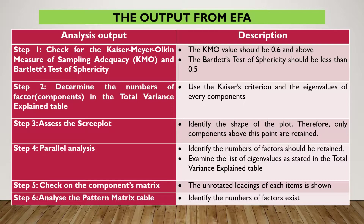This is the summary of output steps from EFA. Step one: check the Kaiser-Meyer-Olkin (KMO) and Bartlett's Test of Sphericity — KMO value should be 0.6 and above, and Bartlett's test should be significant at less than 0.05. Step two: identify the number of factors using Kaiser Criteria and Eigenvalues. Step three: assess the scree plot and identify its shape using parallel analysis. Step four: identify the number of factors to retain or remove. Step five: check the component loadings. Step six: analyze the pattern matrix table to identify the number of factors.